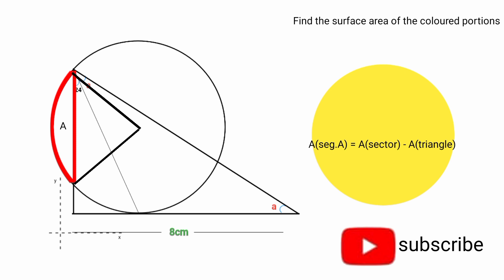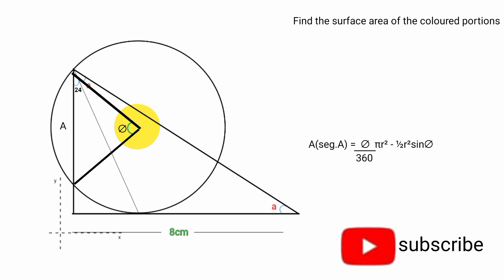Area of segment A equals area of sector minus area of triangle. Area of sector is theta over 360 times pi r squared, and area of triangle can be found by half r squared sine theta, where theta is the angle subtending to the center.